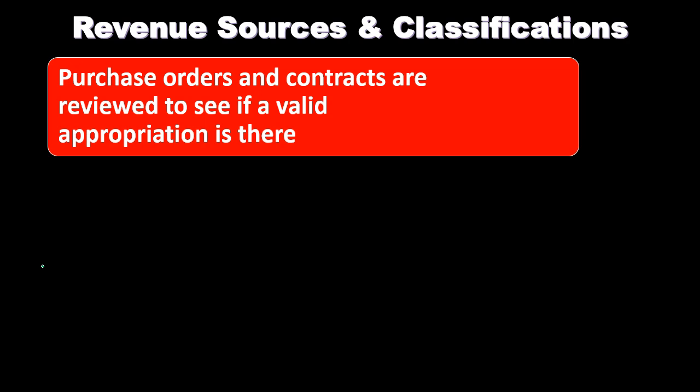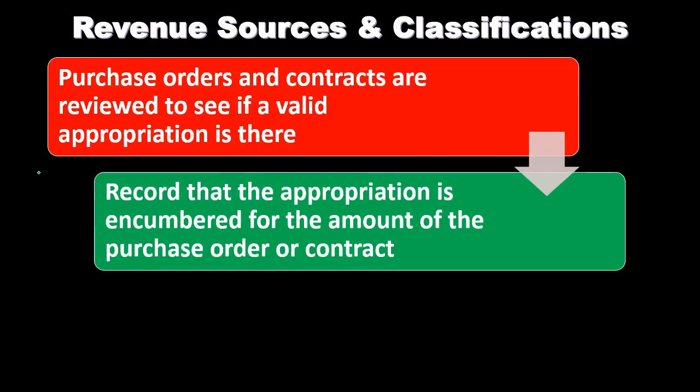We record the budget, meaning the appropriation is already on the books — we've essentially assigned where we think the money is going to go. Then we review the purchase order to see if it's valid and aligns with the appropriation. At that point we record that the appropriation is encumbered for the amount of the purchase order or contract. We haven't received the inventory or paid for it, but we record the purchase order: debit the encumbrance account, and the other side goes to an equity-type clearing account.